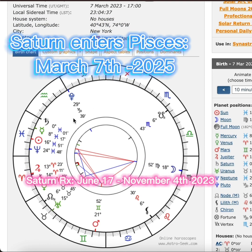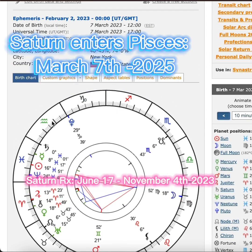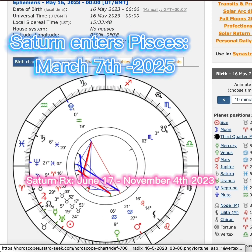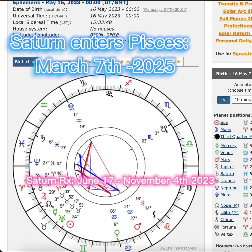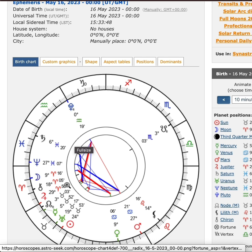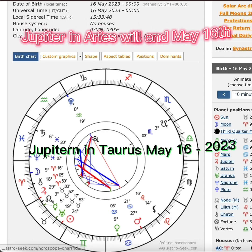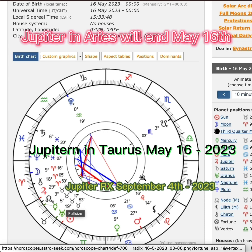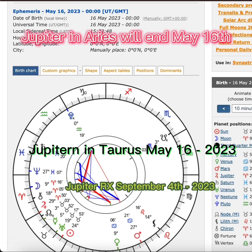When Saturn goes retrograde, it will be June 17th through November 4th of 2023. Next, Jupiter will enter Aries, which it already has in 2023, but on May 16th Jupiter will end its transit in Aries and enter Taurus, remaining there for the rest of 2023. May 16th is important — Jupiter, the planet of joy, the belief system, the abundance and opportunity of the year, will be entering Taurus. Around September 4th through the end of the year it will go retrograde in Taurus.